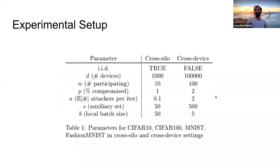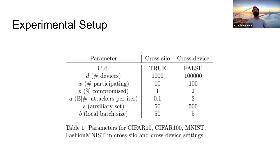In our empirical setup, we train ResNet models on MNIST, Fashion MNIST, Federated Extended MNIST, CIFAR-10, and CIFAR-100. We aim to train models that, in the absence of attacks or defenses, obtain state-of-the-art accuracy. We train models in both cross-silo and cross-device settings. In the cross-silo setting, data is distributed IID across 1,000 simulated devices, 10 of which participate each iteration. In the cross-device setting, data is distributed non-IID across 10,000 simulated devices, 100 of which participate each iteration, such that each device has data from one class.